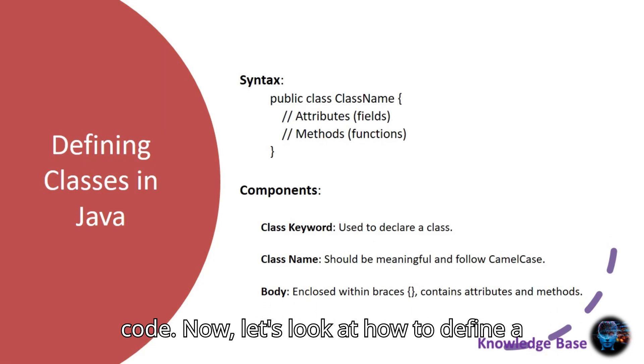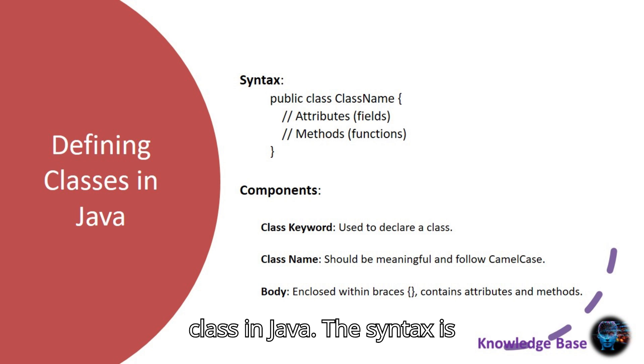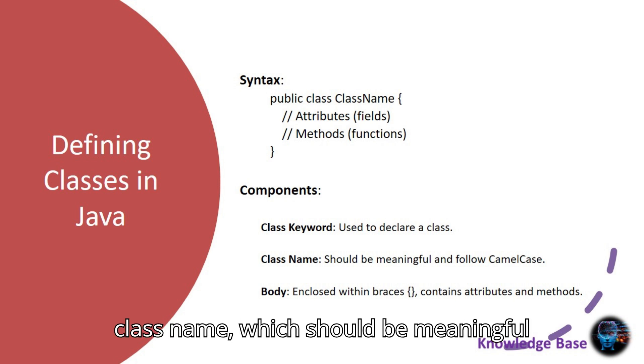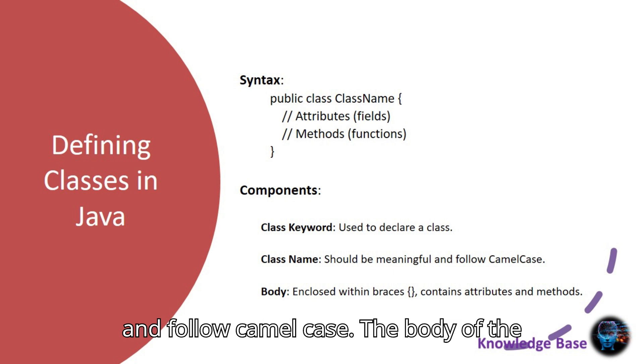Now, let's look at how to define a class in Java. The syntax is straightforward: public class ClassName with attributes (fields) and methods (functions). The keyword class is used to declare a class, followed by the class name, which should be meaningful and follow CamelCase. The body of the class, enclosed within curly braces, contains attributes and methods that define the state and behavior of the object.